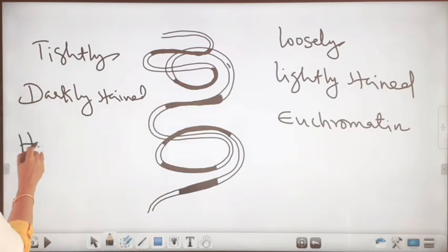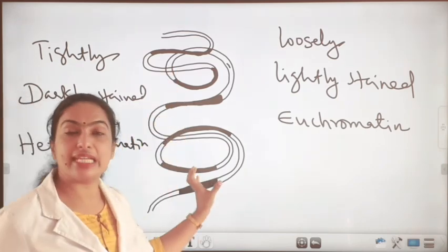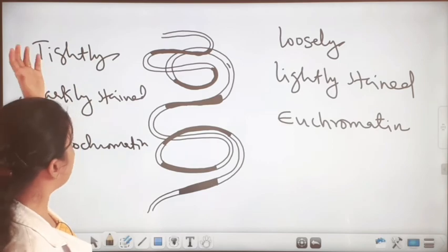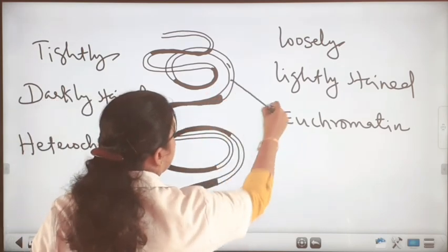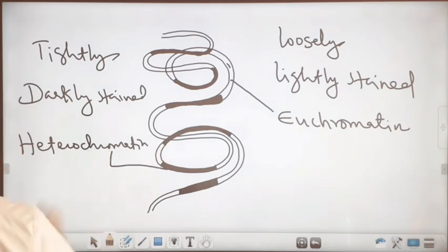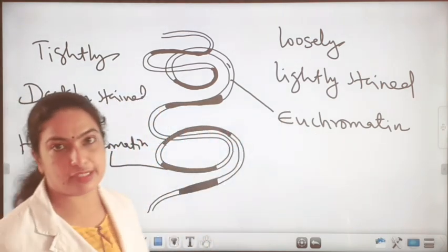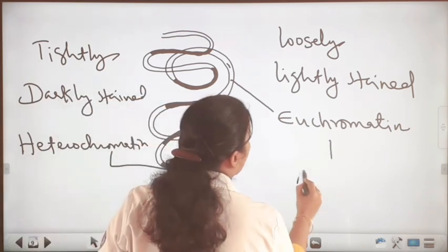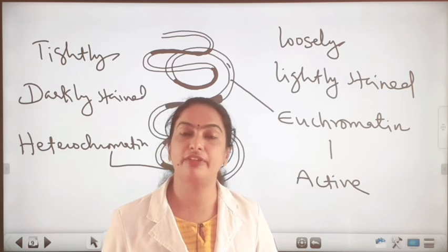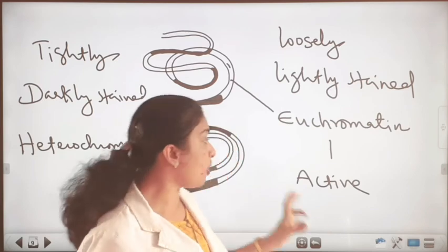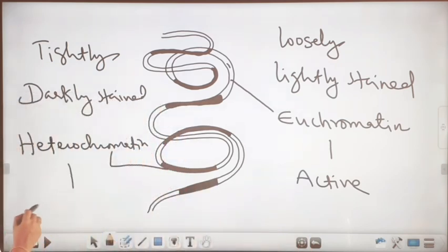That chromatin region is called heterochromatin. When we see through the microscope we can see chromatin inside the nucleus as tightly packed or darkly stained, and lightly stained. The lightly stained areas are called euchromatin, and the darkly stained areas are called heterochromatin. This euchromatin is transcriptionally more active.